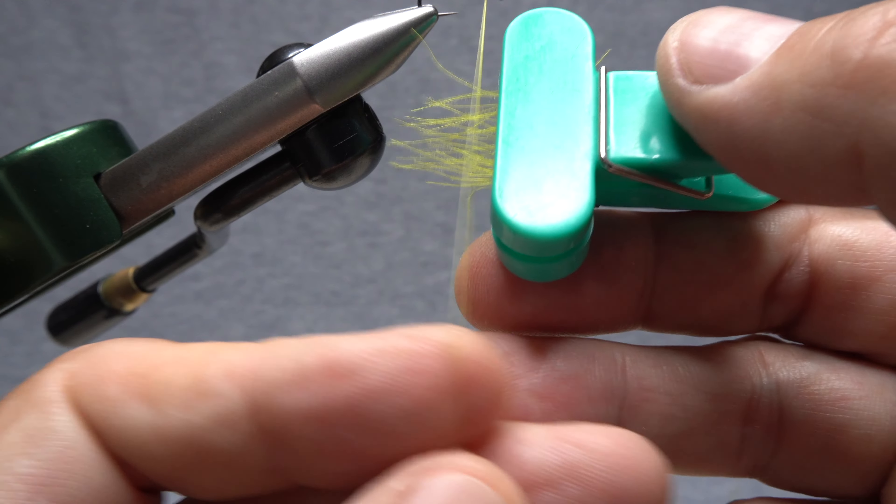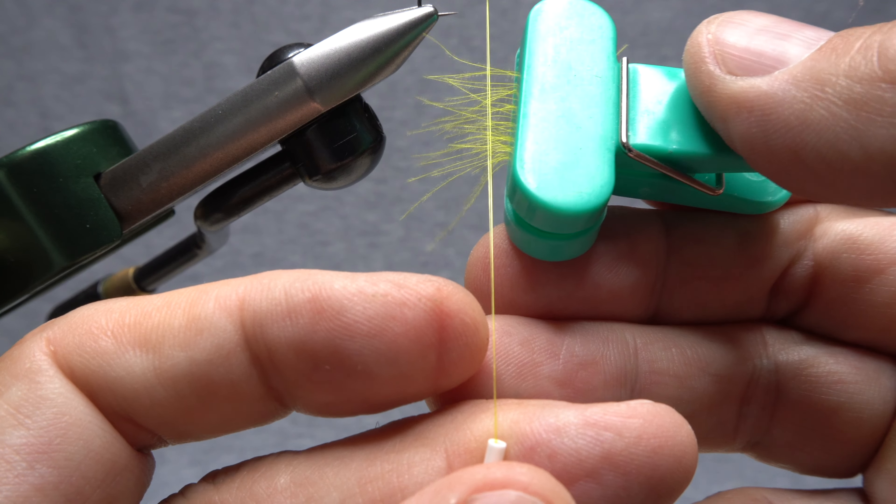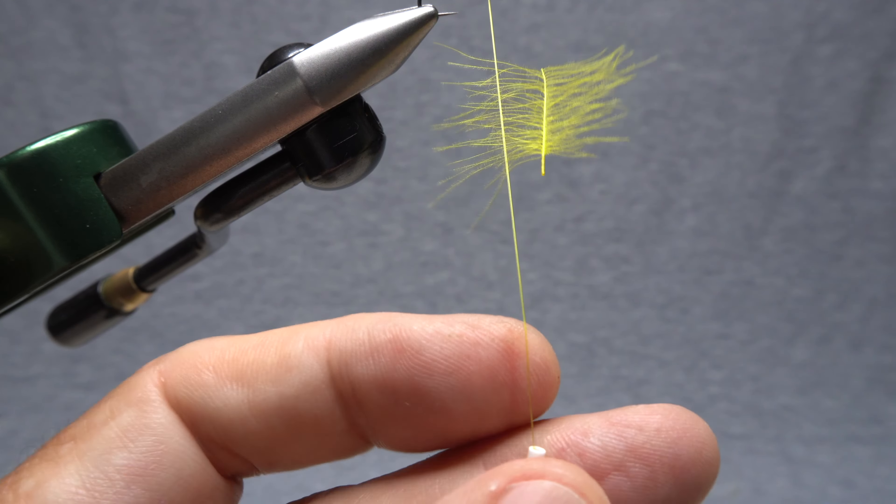Insert the tip of your left hand index finger between the strands to hold them apart. Slip the CDC fibers between the strands and remove your finger to close the strands.